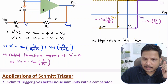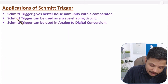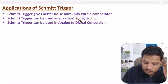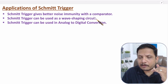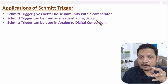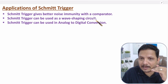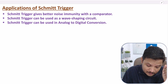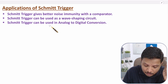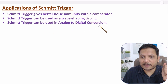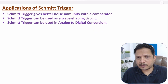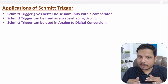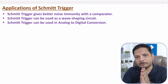Now let us talk about applications. Schmitt trigger gives better noise immunity compared to a comparator, so we commonly use the Schmitt trigger circuit as a comparator where hysteresis provides better noise immunity. Schmitt trigger can also be used as a wave shaping circuit, and in analog-to-digital conversion. I hope you have understood all those things. If you have any questions, please note them in the comment section. Thank you so much for watching this video.